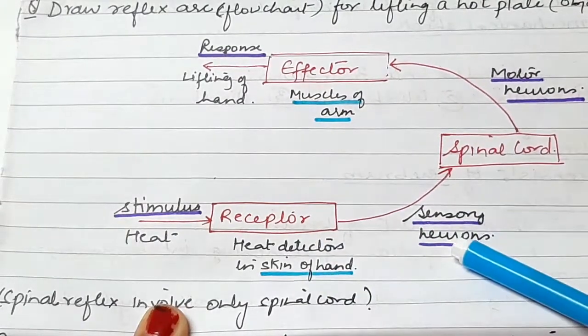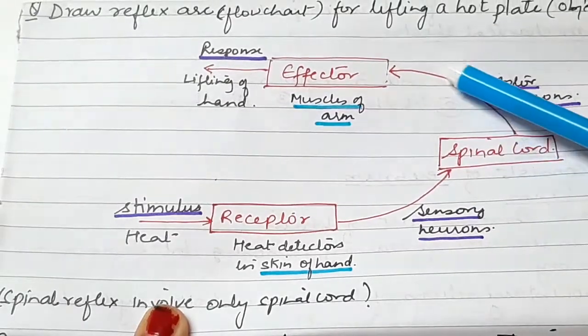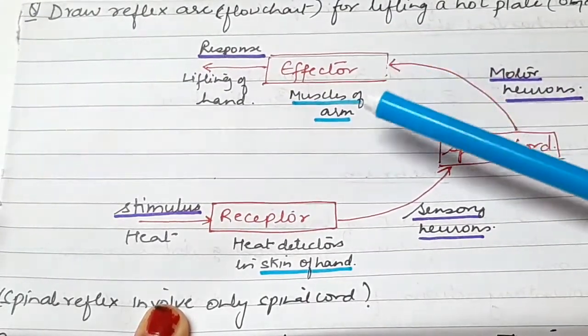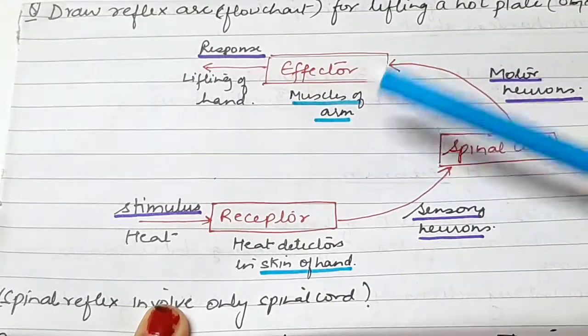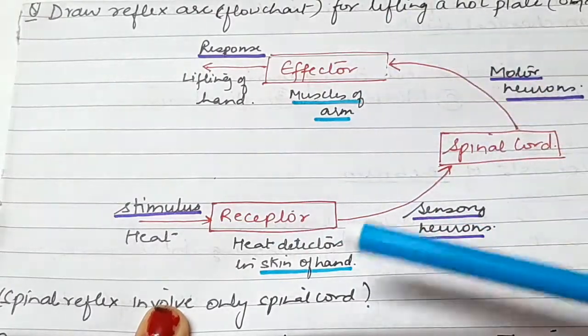And here, sensory neurons carry the message to the spinal cord. And the motor neuron carries the message to the effector. The effector was the muscle of the arm, right? And the response was the lifting of the hand.